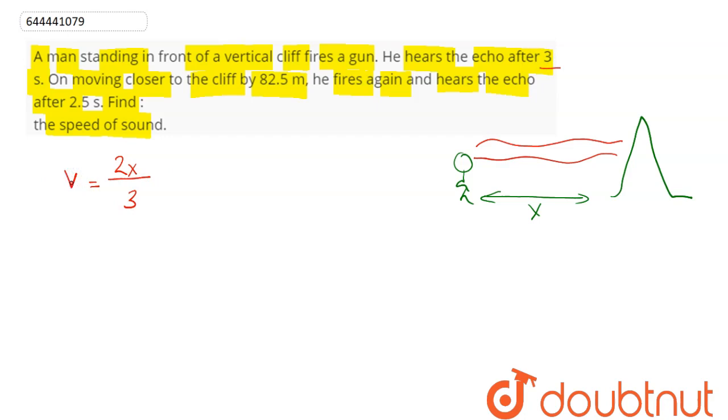In the second part, the man moves closer to the cliff by 82.5 meters. When he moves closer to the hill by 82.5 meters, the total distance becomes x minus 82.5 meters from the hill.